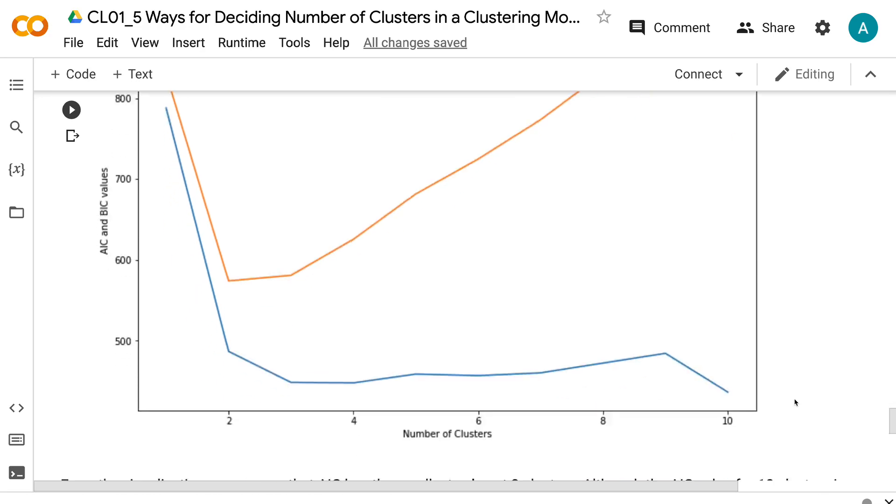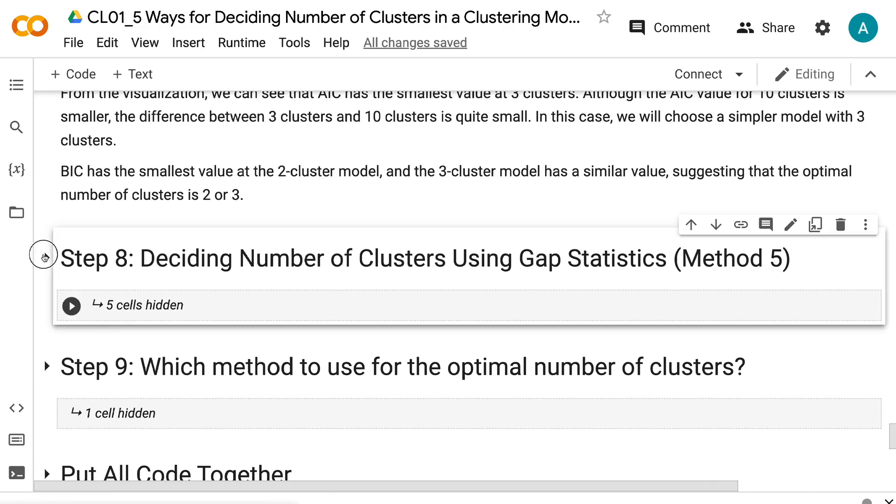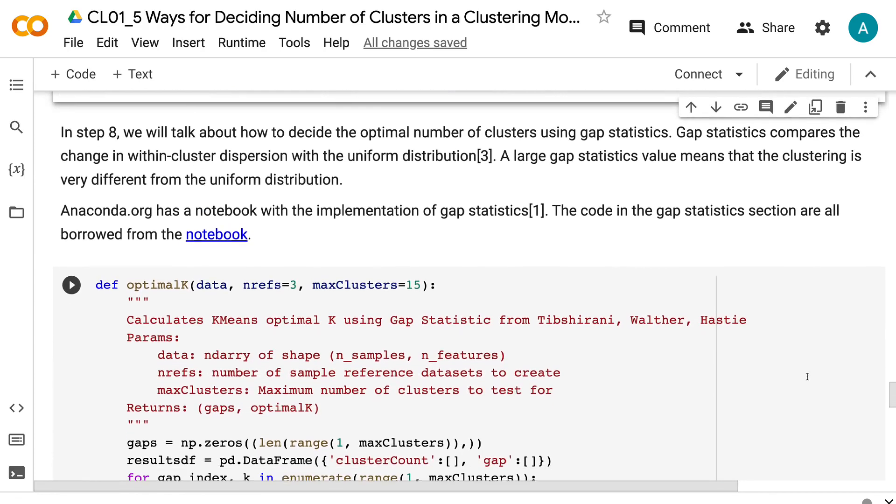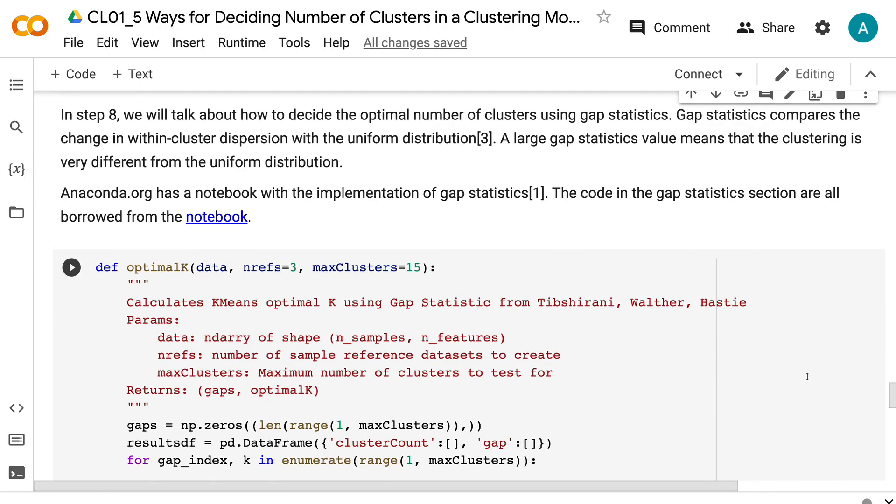In step 8, we will talk about how to decide the optimal number of clusters using gap statistics. Gap statistics compares the change in within-cluster dispersion with the uniform distribution. A large gap statistics value means that the clustering is very different from the uniform distribution.